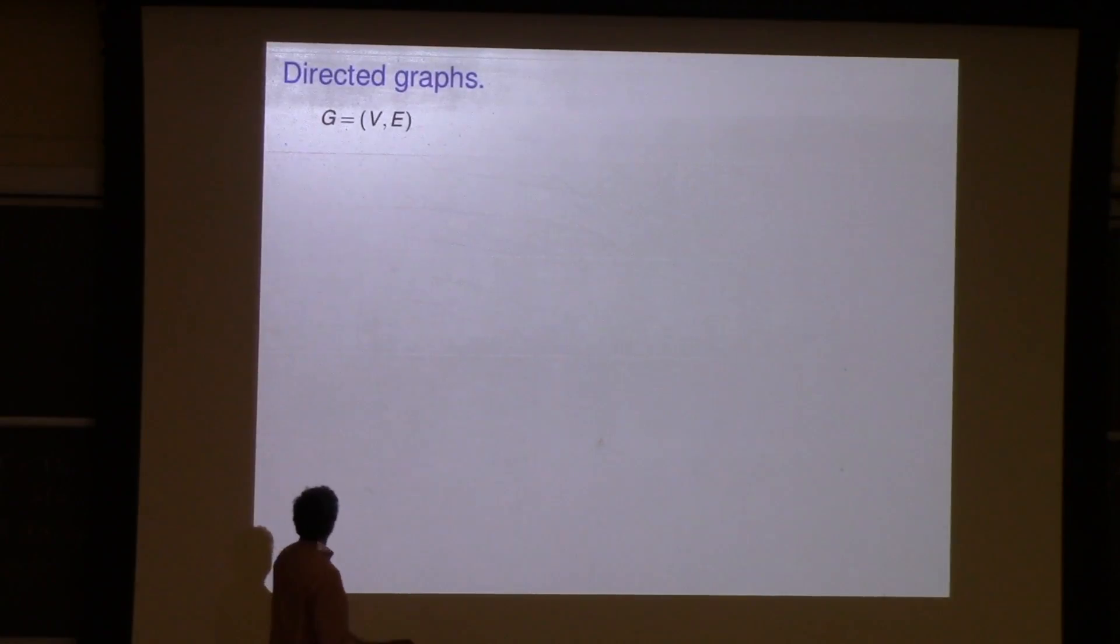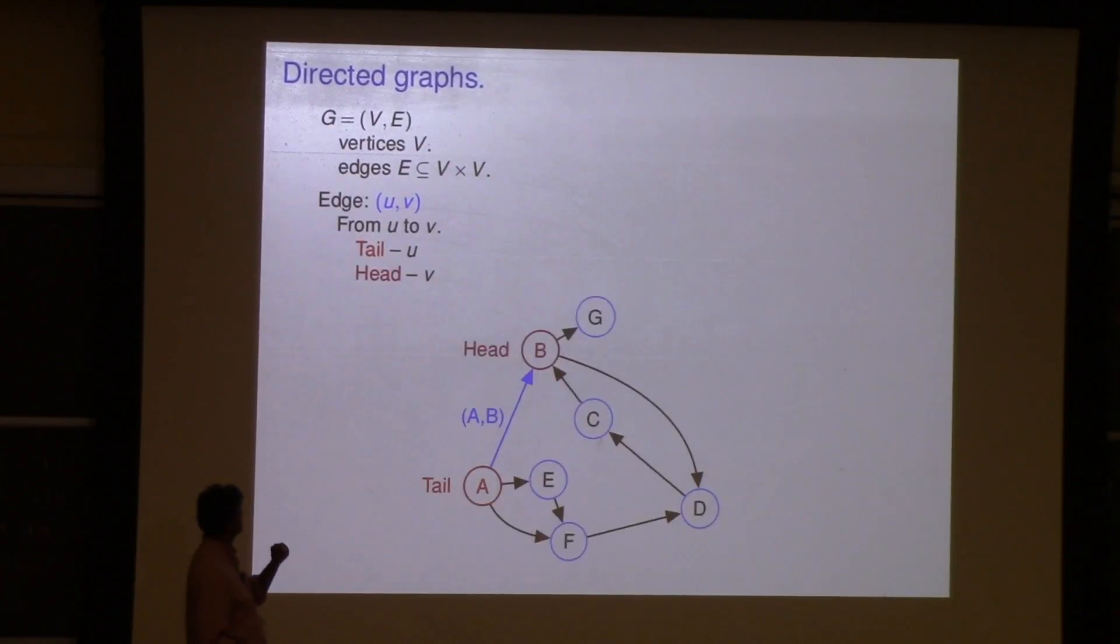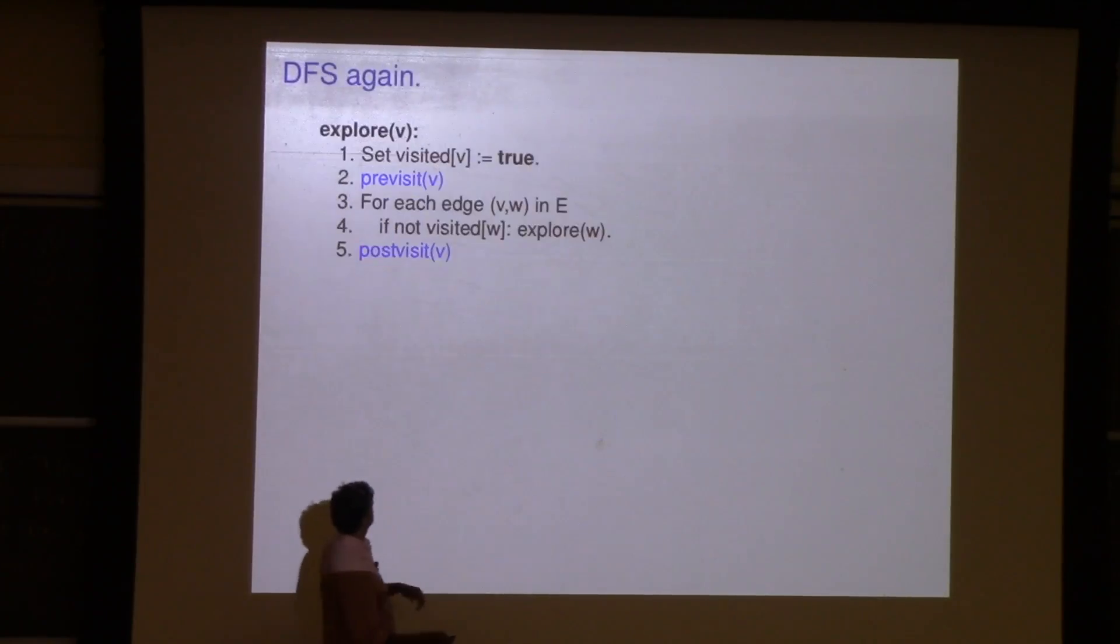We have graphs, they're edges, here you have a tail, you have a head, right? It points from, this is the for this edge AB, and an edge again is a pair of vertices, and in directed graphs, edge goes from the tail to the head.